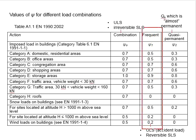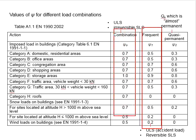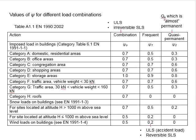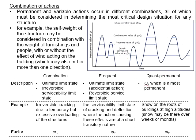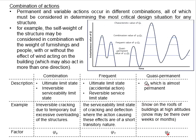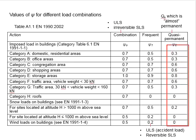The ψ₁ factor is normally smaller than the combination factor ψ₀. Lastly, the quasi-permanent type refers to variable actions which are almost permanent over time — for example, snow on the roof of a building at high altitude, where snow may be present for over weeks and months. The corresponding factor is denoted as ψ₂.